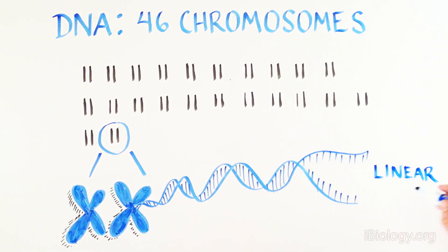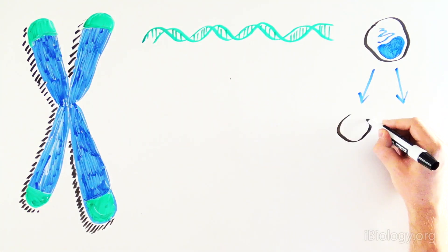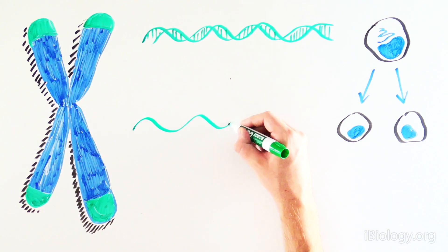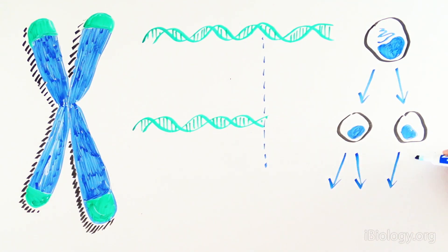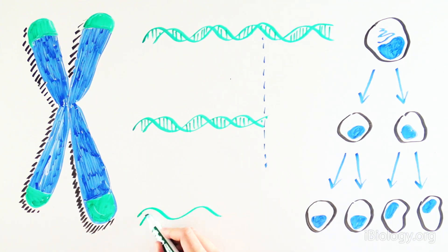Chromosomes consist of linear strands of DNA. As cells divide and our DNA gets replicated, the ends of linear chromosomes cannot themselves get copied. So after multiple cell divisions, the chromosomes get shorter and shorter.